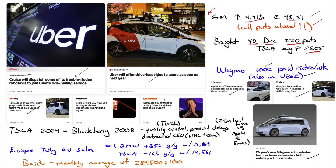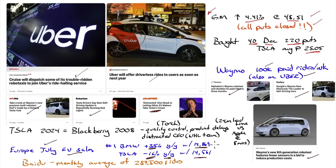Tesla drivers are saying the new self-driving update is repeatedly running red lights. Elon Musk is letting other EV makers take Tesla's crown. In Europe in July, EV sales: BMW up 35% year-over-year at 14,869 units — number one. Tesla down 16% year-over-year at 14,561 units. BMW is now the number-one seller in Europe. Back to robo taxis: Baidu's monthly average is 287,500 rides; Waymo is at 400,000. There are some 40 to 50 robo taxi businesses out there across the world, and Tesla is really, really late to the party.